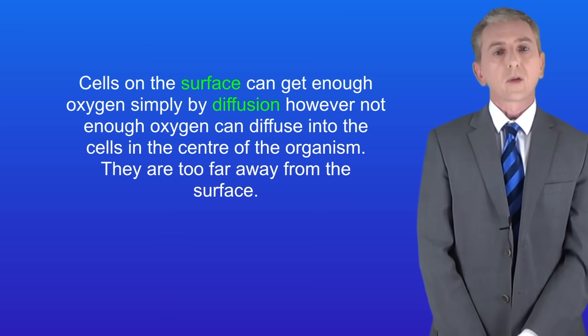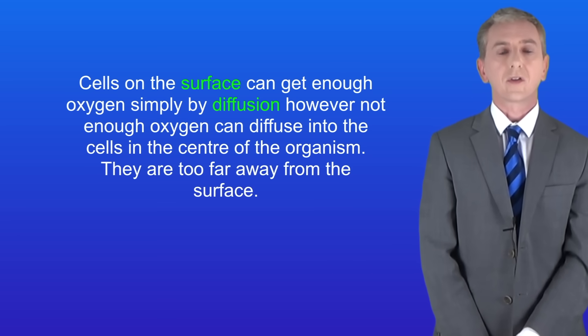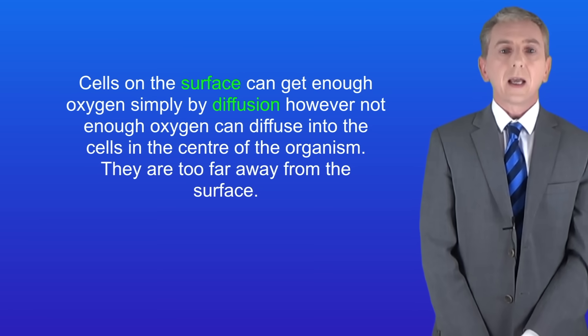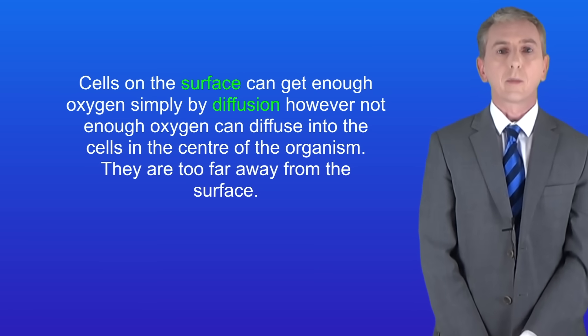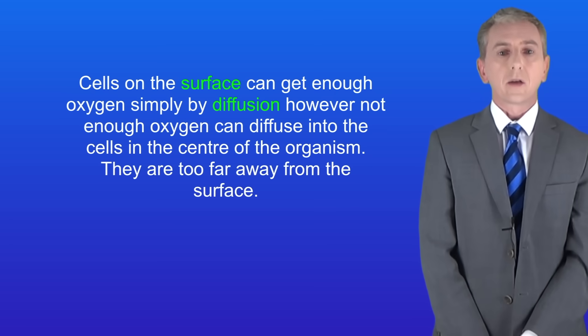Now animals have solved this problem in two ways. Firstly, animals have got special structures for gas exchange with a very high surface area, for example lungs in mammals. Secondly, animals have a transport system to carry gases around the body. In later videos we're going to look at how gases are exchanged and transported in mammals but in this video we're looking at fish.